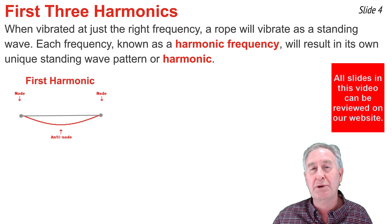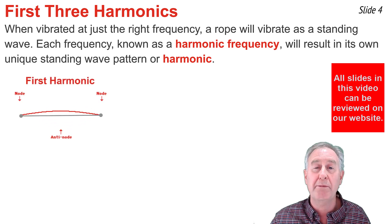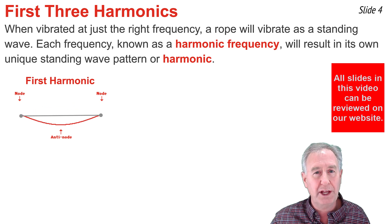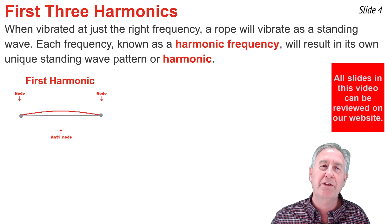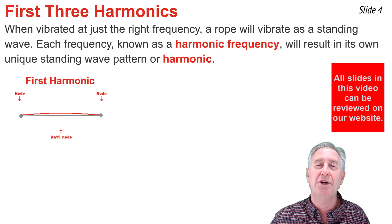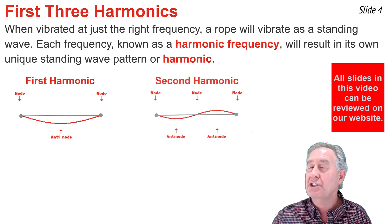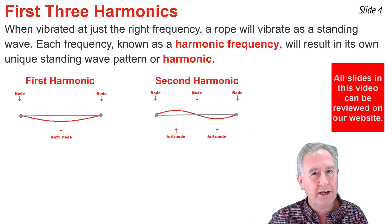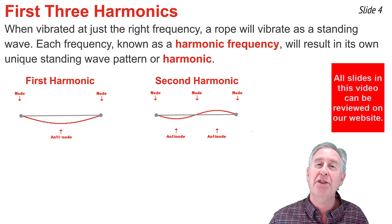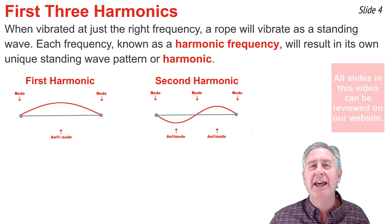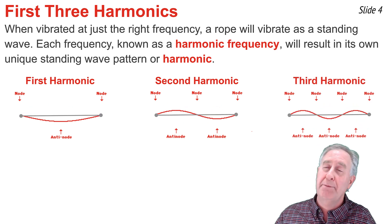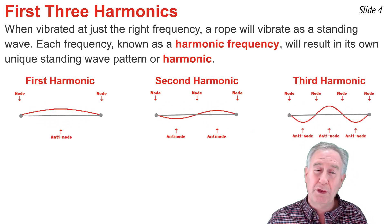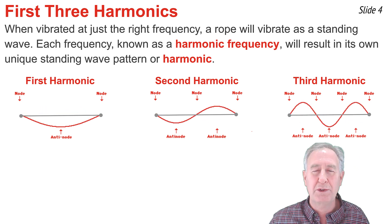This animation depicts a rope vibrating in its first harmonic wave pattern. Note that there's an antinode exactly in the middle of that rope for the first harmonic, and there are two nodes on the ends. Here is the same rope vibrating in its second harmonic, with two antinodes and three nodes along the rope. And finally, here's the same rope vibrating in the third harmonic — note there are three antinodes for the third harmonic and four nodes.